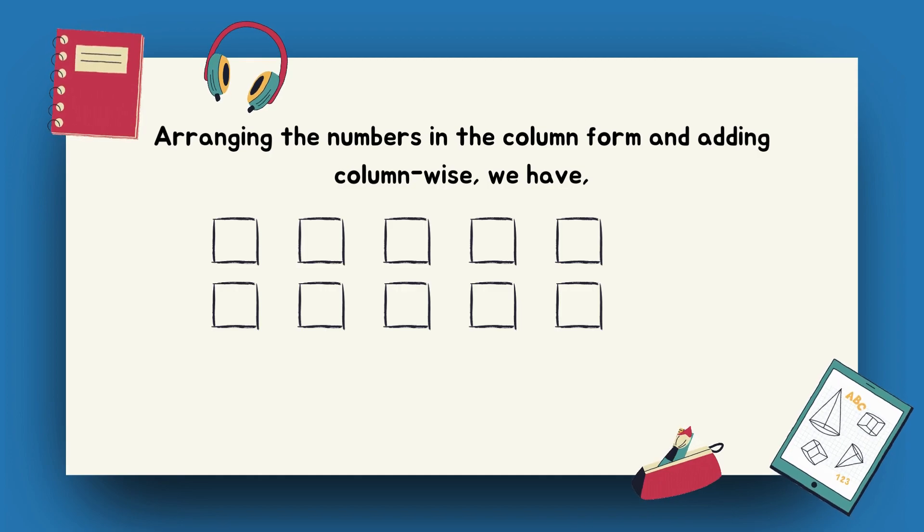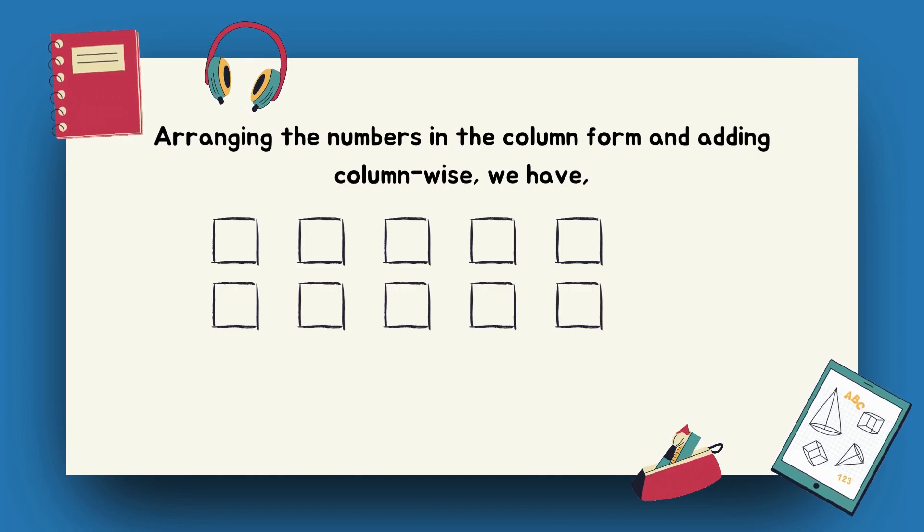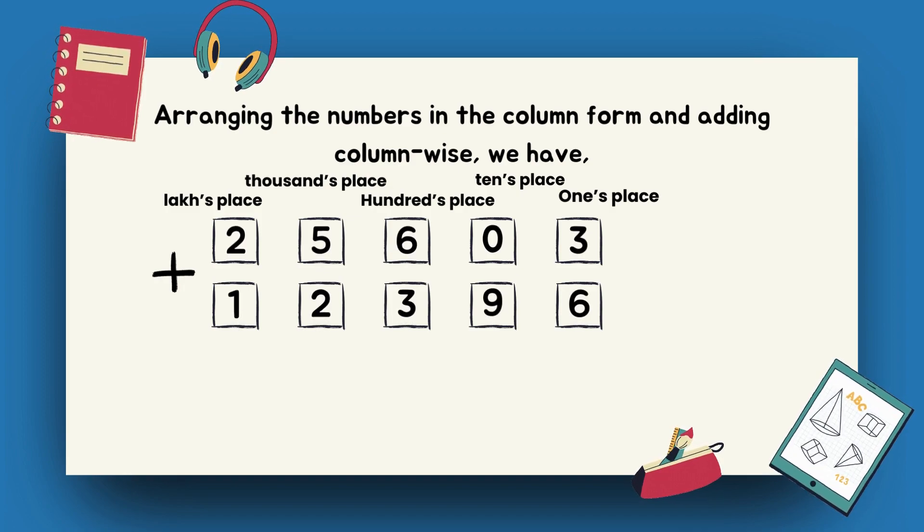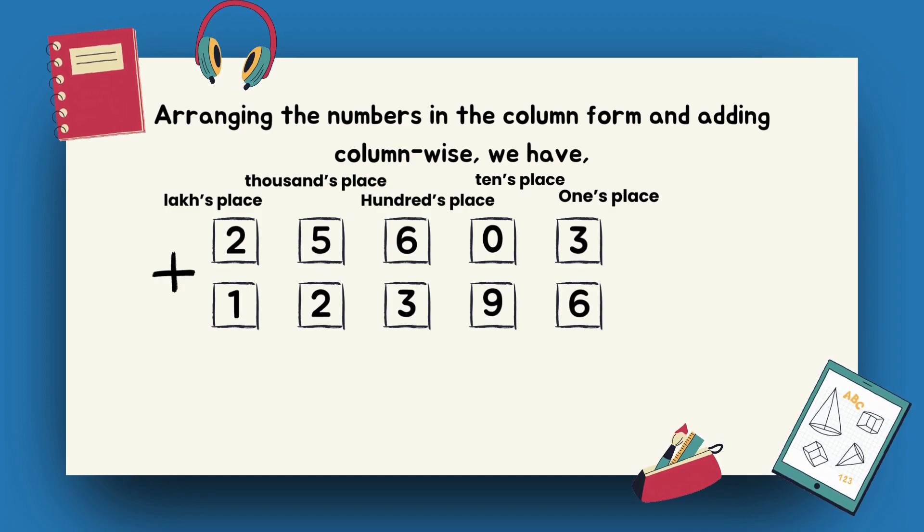Example 1: Add 25603 and 12396. Arranging the numbers in the column form and adding column-wise, we have 25603 plus 12396.